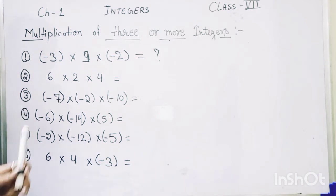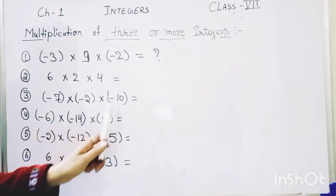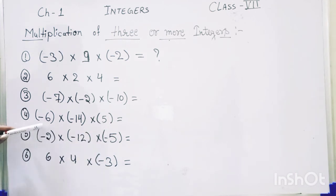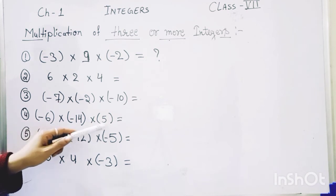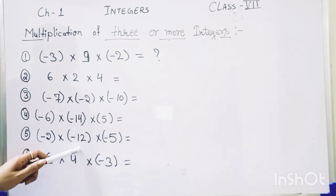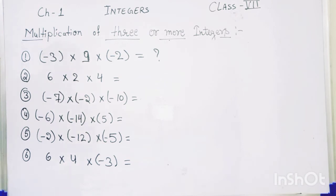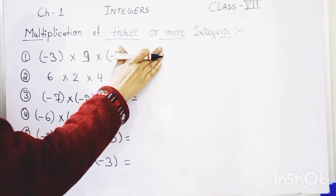The third question is minus seven multiplied by minus two multiplied by minus ten. The fourth one is minus six multiplied by minus fourteen multiplied by plus five. The fifth is minus two multiplied by minus twelve multiplied by minus five. The last one is six multiplied by four multiplied by minus three. You can pause the video, note the questions, and try to solve them one by one, then match the answers.